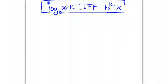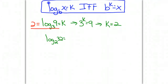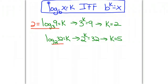We can use this definition to evaluate logs. For log base 3 of 9, rewriting gives 3 to the k equals 9, so k equals 2 — meaning log base 3 of 9 equals 2. For log base 2 of 32, rewriting gives 2 to the k equals 32, so k equals 5 — meaning log base 2 of 32 equals 5.